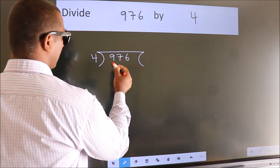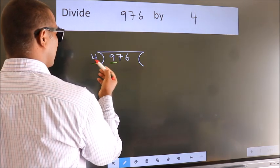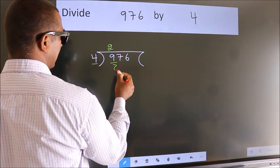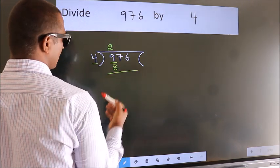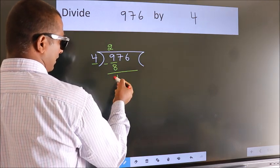Next, here we have 9, here 4. A number close to 9 in 4 table is 4 twos, 8. Now, we should subtract. We get 1.